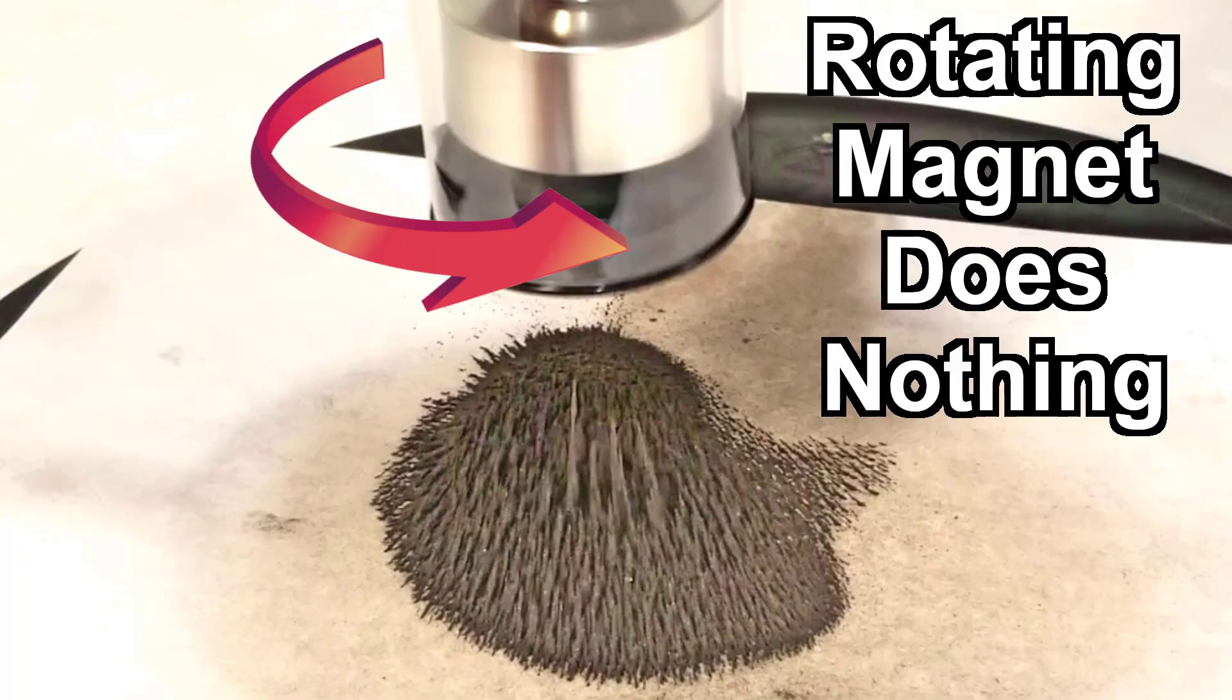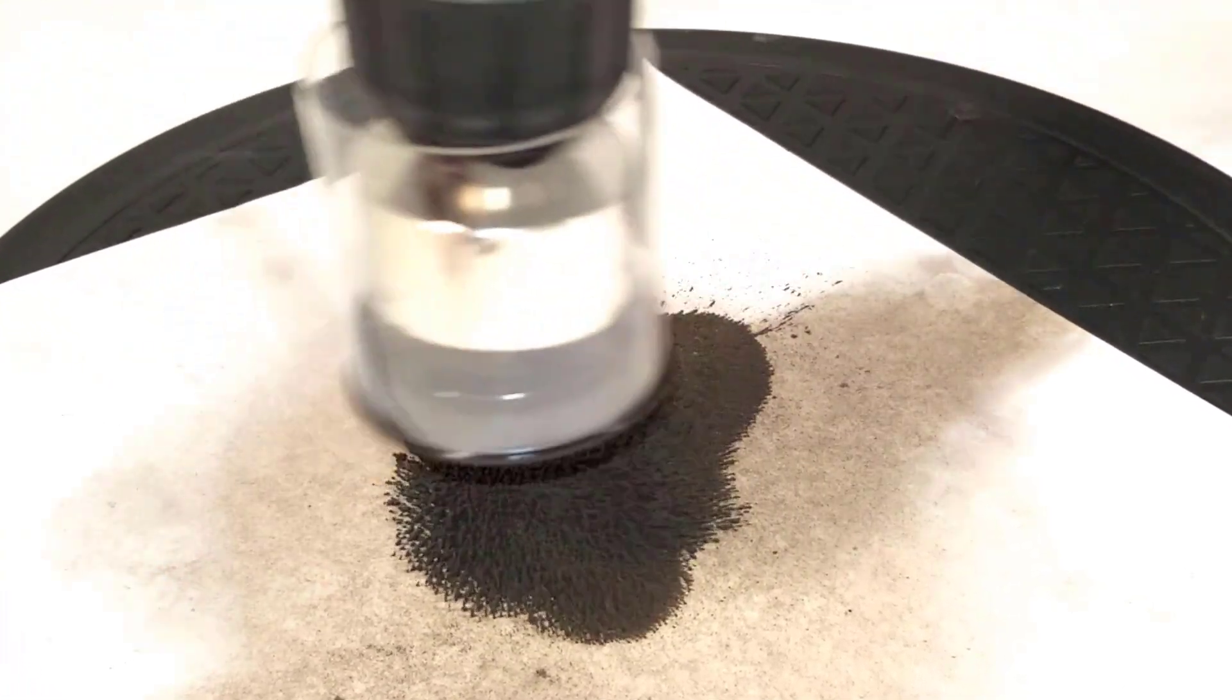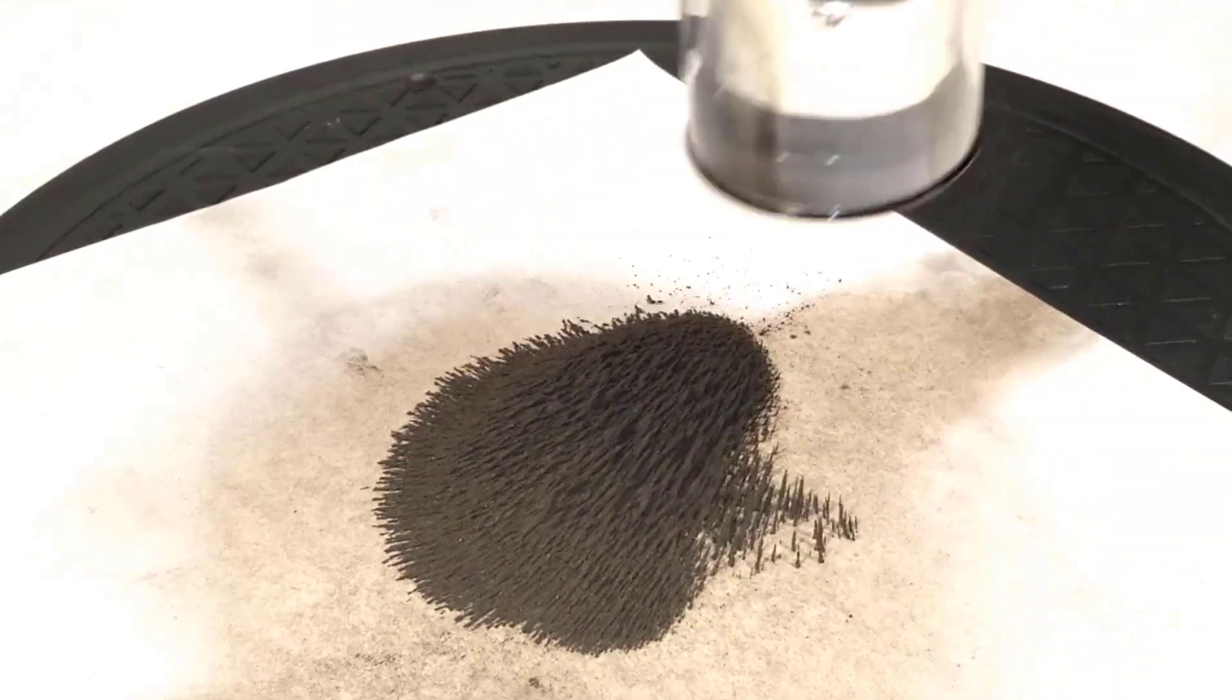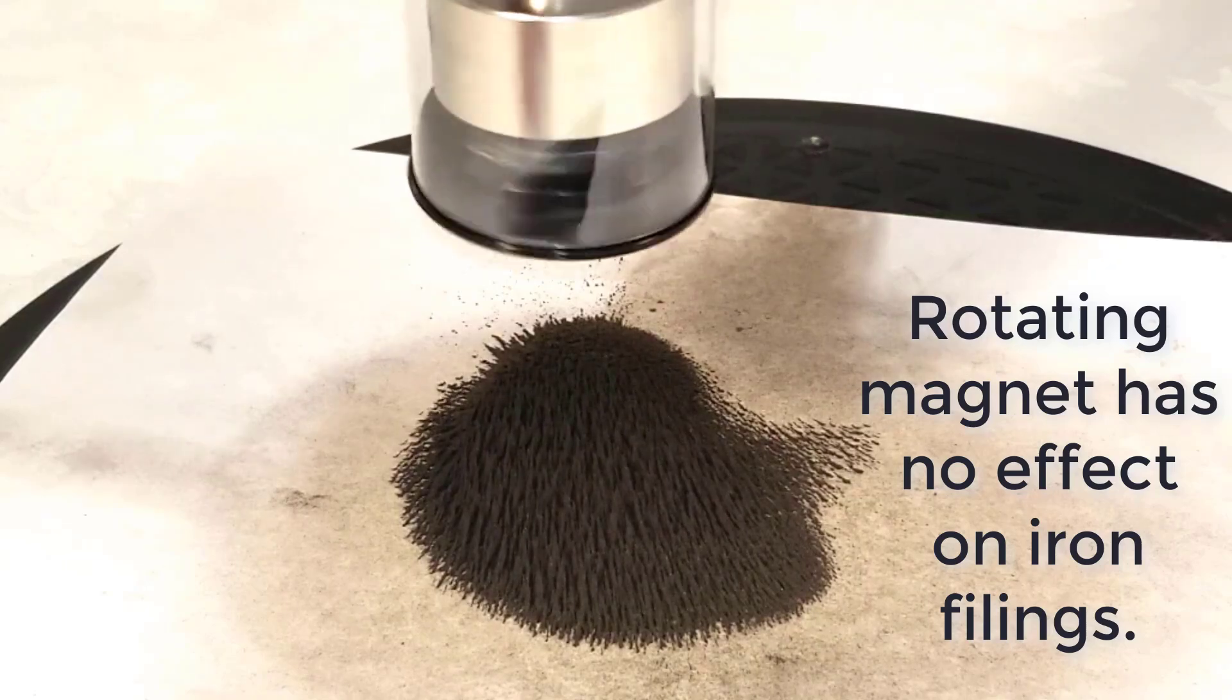Faraday's paradox can be visualized using a magnet and iron filings. Moving the magnet moves the iron filings. However, rotating the magnet has no effect on the iron filings.